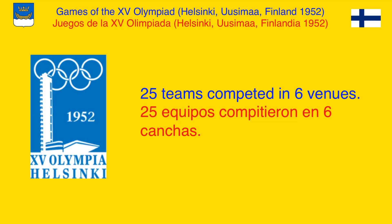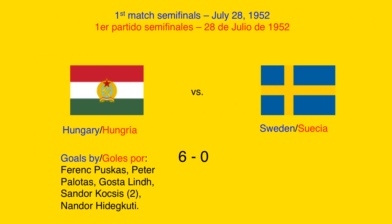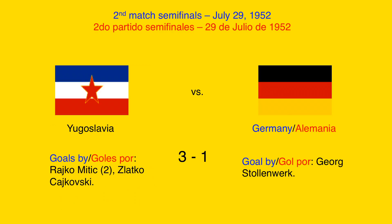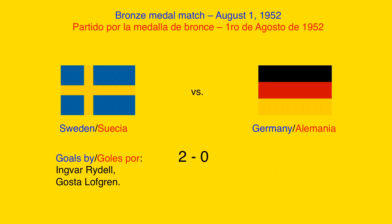In the 15th Summer Olympic Games in Helsinki, Finland, 1952, 25 teams competed in 6 venues in the football tournament. In the first match of the semifinals, Hungary beat Sweden 6-0. In the second match of the semifinals, Yugoslavia beat Germany 3-1. In the bronze medal match, Sweden beat Germany 2-0.